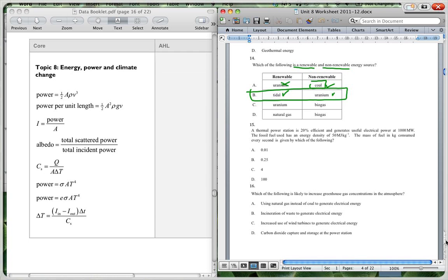Question 15. A thermal power station is 20% efficient and generates useful electric power at 1,000 megawatts. So this 1,000 megawatts means that you're using 1,000 times 10 to the 6 joules per second. That's the amount that it's generating, the energy that it's generating.